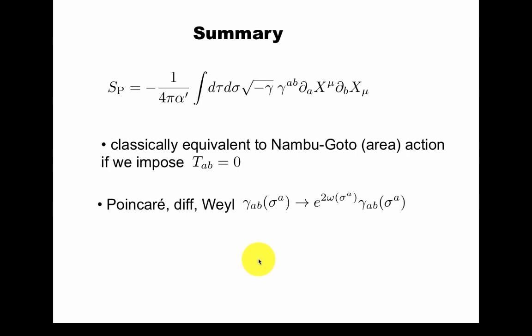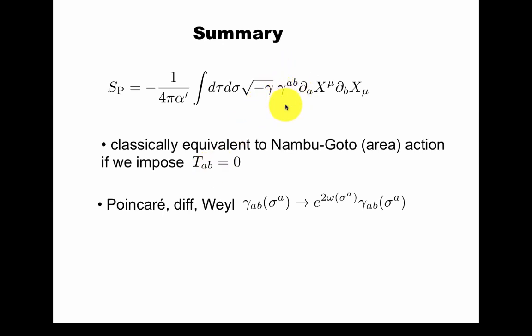The summary: here's the Polyakov action, given in terms of the embedding function from worldsheet coordinates sigma and tau to spacetime with an index mu. There's the worldsheet object gamma that appears in this action, and a normalization involving alpha prime, which has units of area. The Polyakov action is classically equivalent to the Nambu-Goto action — which is just the area of the worldsheet — if we impose that the stress-energy tensor vanishes, because the stress-energy tensor is defined as the variation with respect to the worldsheet metric, which is what we needed to impose to get back to Nambu-Goto. This action has Poincaré symmetry in d dimensions, diffeomorphism symmetry in two dimensions, and the somewhat mysterious Weyl symmetry of rescaling of the worldsheet metric.